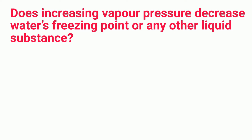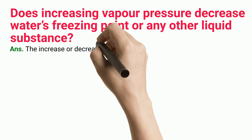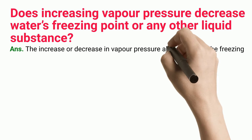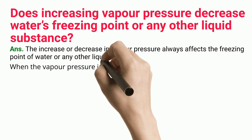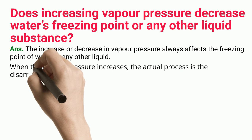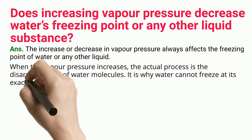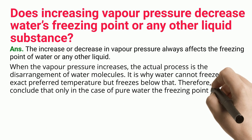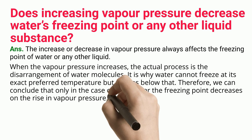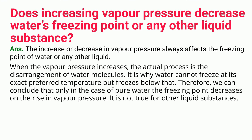Does increasing vapor pressure decrease water's freezing point or any other liquid substance? The increase or decrease in vapor pressure always affects the freezing point of water or any other liquid. When vapor pressure increases, the actual process is the disarrangement of water molecules, which is why water cannot freeze at its exact preferred temperature but freezes below that. Therefore, only in the case of pure water does the freezing point decrease on the rise in vapor pressure; it is not true for other liquid substances.